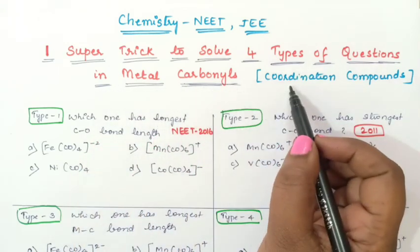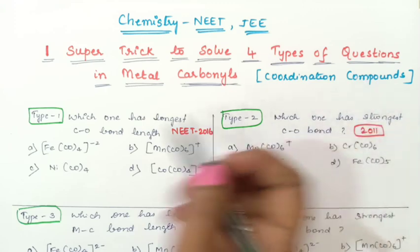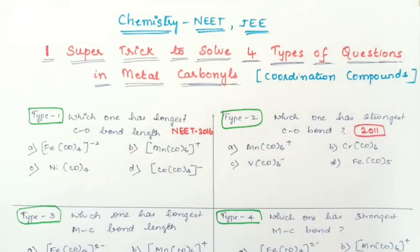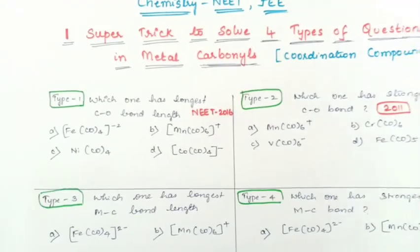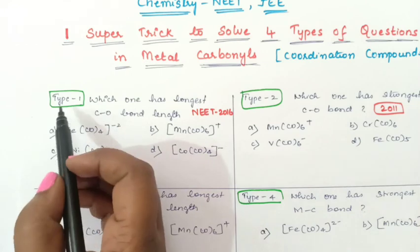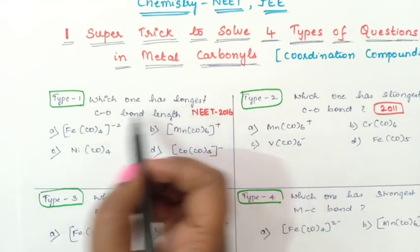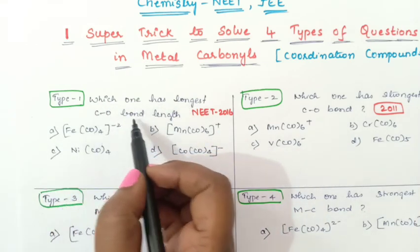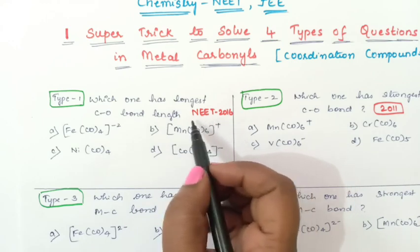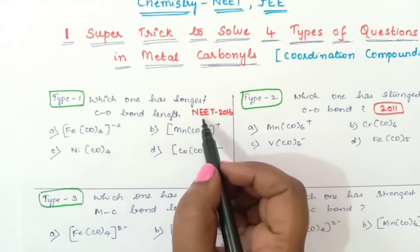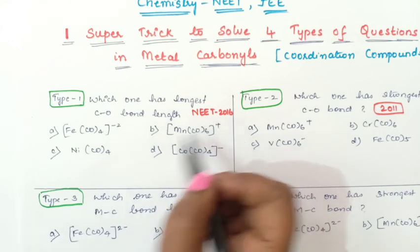This is from the chapter coordination compounds. Here we will see what are those four types of questions. The first type of question is: which one has the longest CO bond length? This question has appeared in the NEET 2016 question paper.